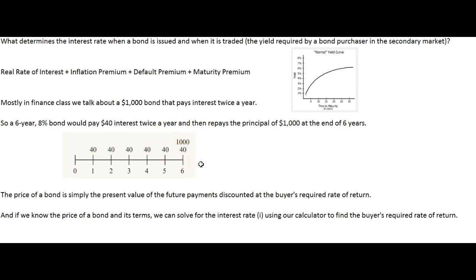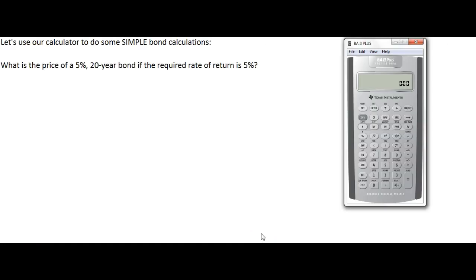And if we know what the bond is trading for today out in the secondary market and we know its terms, then we can use our calculator to solve for I to find out what the buyer's required rate of return is. What discount rate did he or she use to find the present value of those future payments to pay whatever it was he or she paid for that bond?